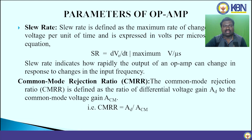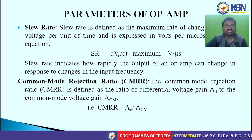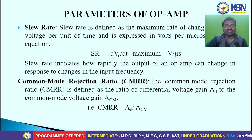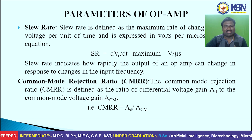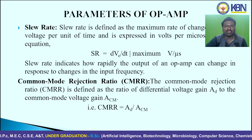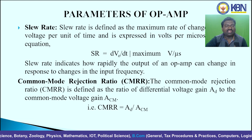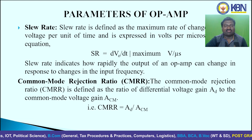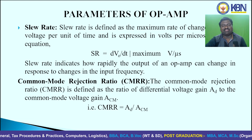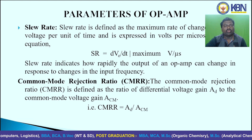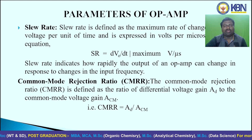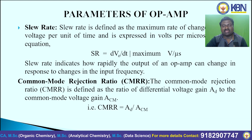The parameters of the operational amplifier include slew rate and CMRR. Slew rate is defined as the maximum rate of change of voltage per unit of time, expressed in volts per microsecond: slew rate equals dV0/dt, where V0 is output voltage and t is time. Slew rate indicates how rapidly the output voltage of an op-amp can change in response to changes in input frequency. The common mode rejection ratio (CMRR) is defined as the ratio of differential voltage gain to common mode voltage gain: CMRR equals AD divided by ACM, where AD is differential voltage gain and ACM is common mode voltage gain.